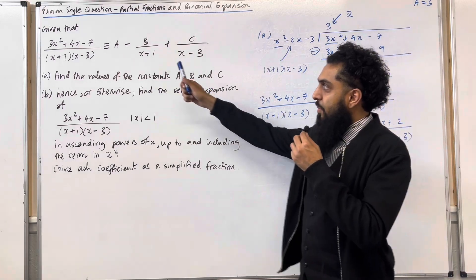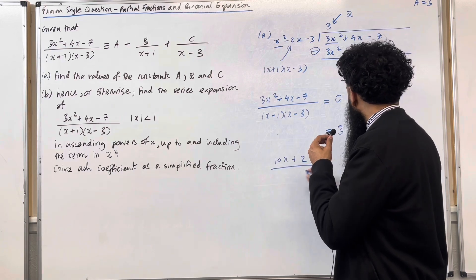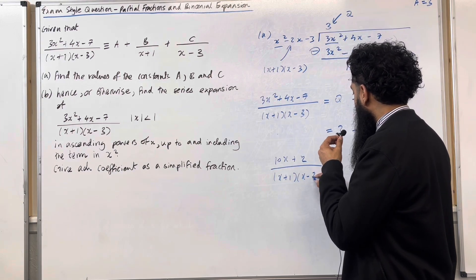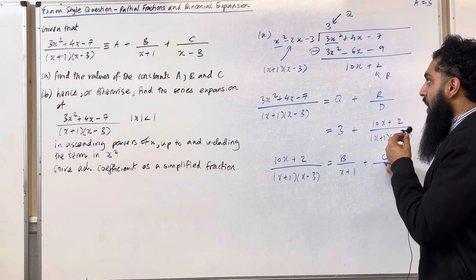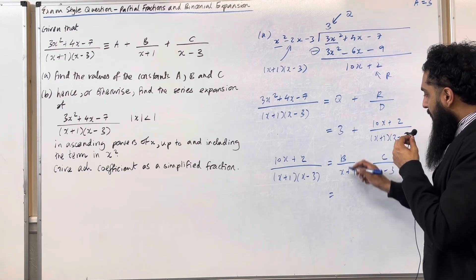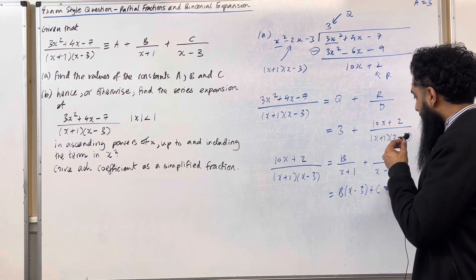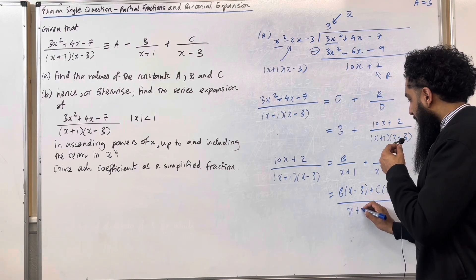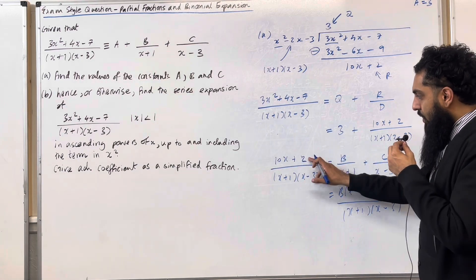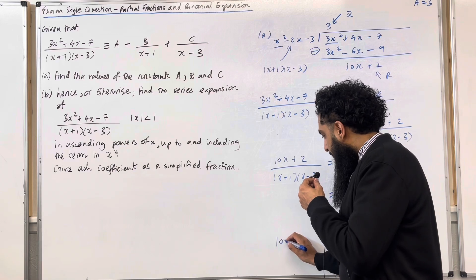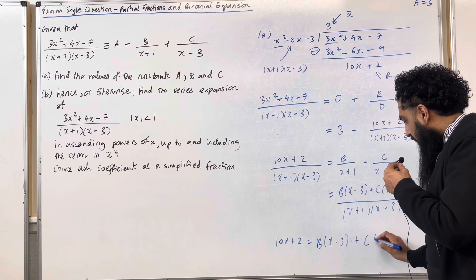Now we need to set the remainder fraction equal to B over (x plus 1) plus C over (x minus 3). So we have (10x plus 2) over (x plus 1)(x minus 3) equals B over (x plus 1) plus C over (x minus 3). Cross-multiplying to combine the fractions gives B(x minus 3) plus C(x plus 1) all over (x plus 1)(x minus 3). Since the fractions are equal, we can set the numerators equal: 10x plus 2 equals B(x minus 3) plus C(x plus 1).